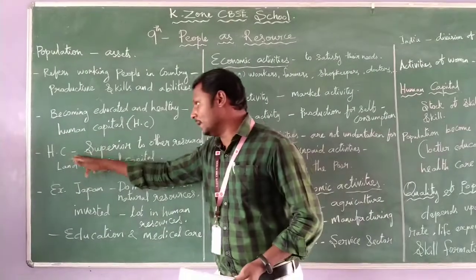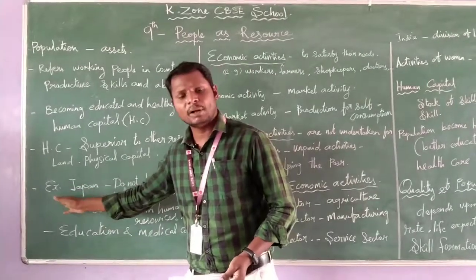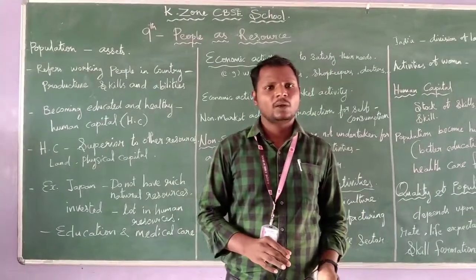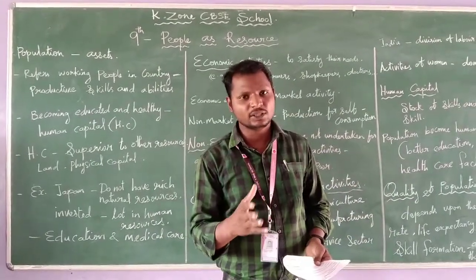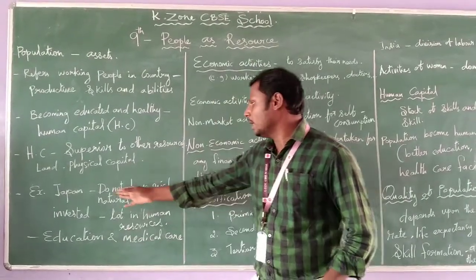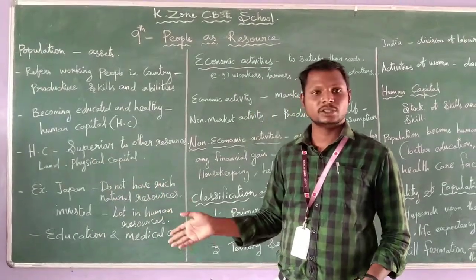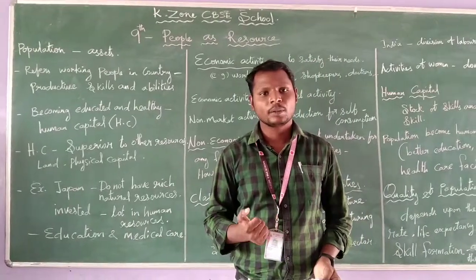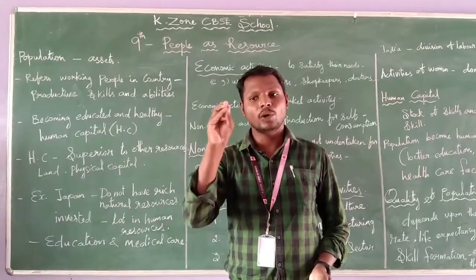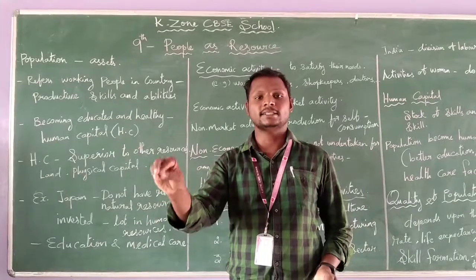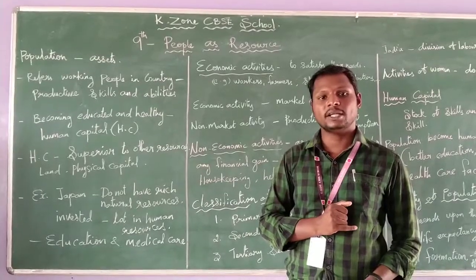Take the example of Japan. Japan is a small country with a lot of natural disasters, and they don't have rich natural resources. But even so, Japan is called a developed country. How? Because they invest more in human resources — they provide more healthcare centers and invest more in education.